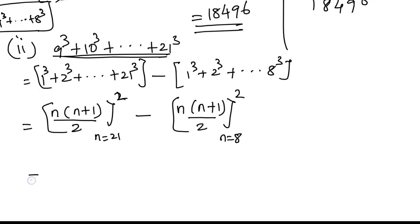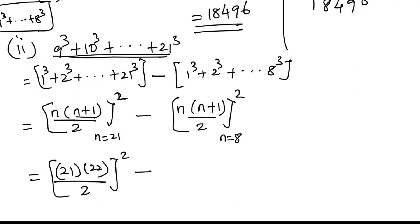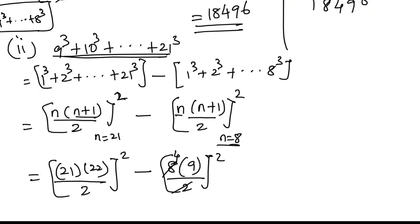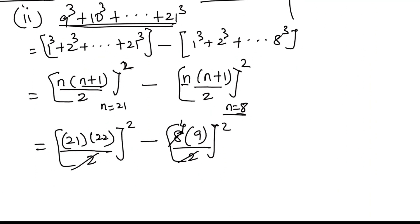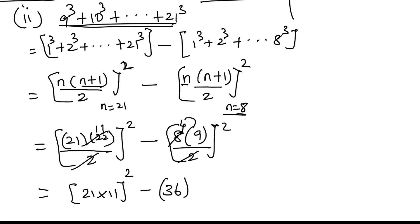So this becomes: 21 into 21 plus 1 is 22 by 2, to the whole square, minus 8 plus 1 is 9 by 2, to the whole square. Cancelling 2 in each: we get 21 into 11, whole square, minus 4 into 9, whole square. That gives 231 squared minus 36 squared. So 36 squared is computed straight away.